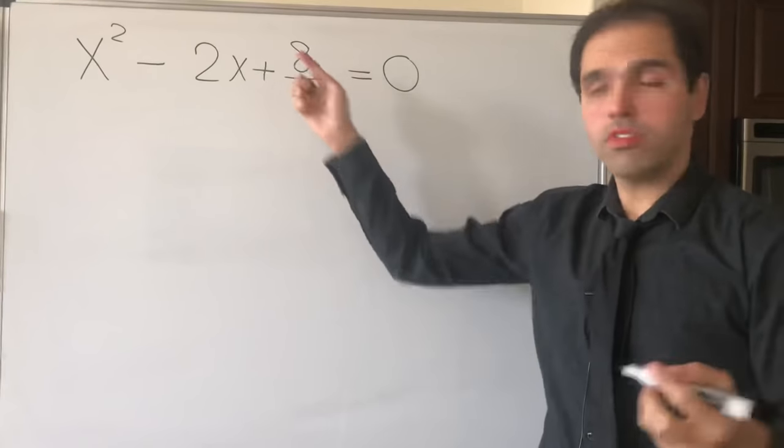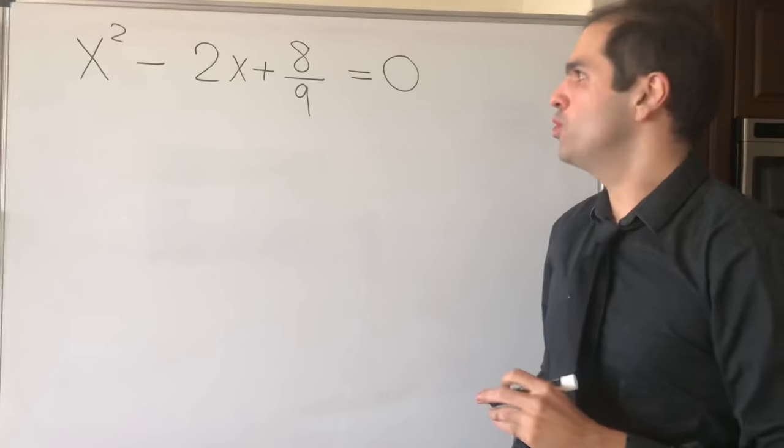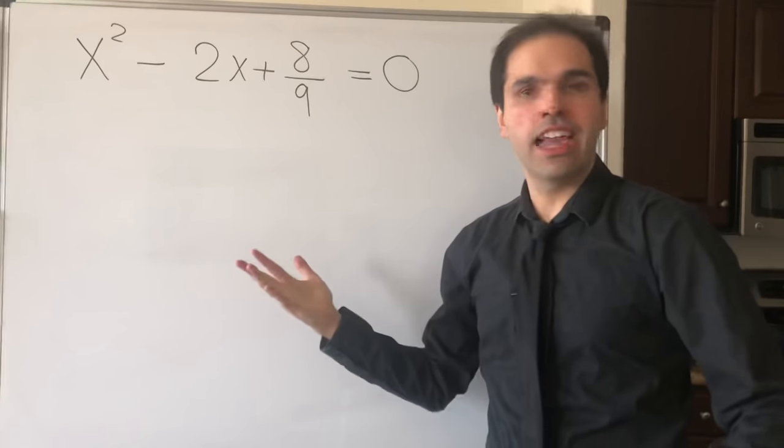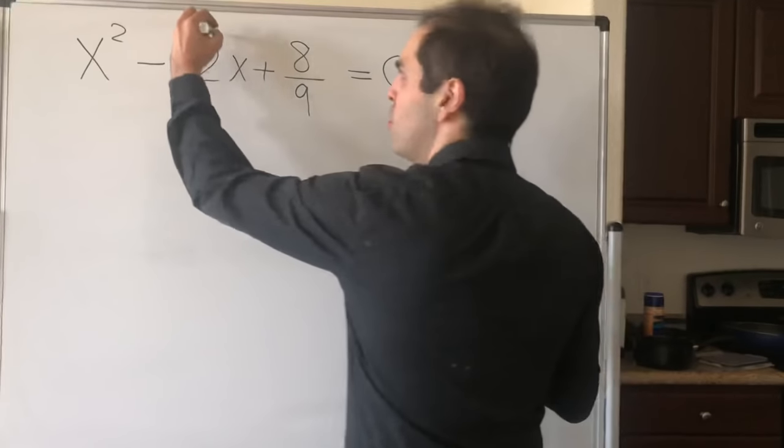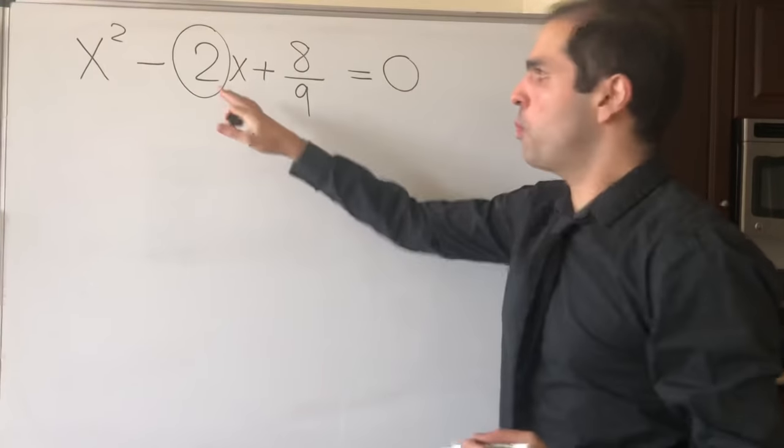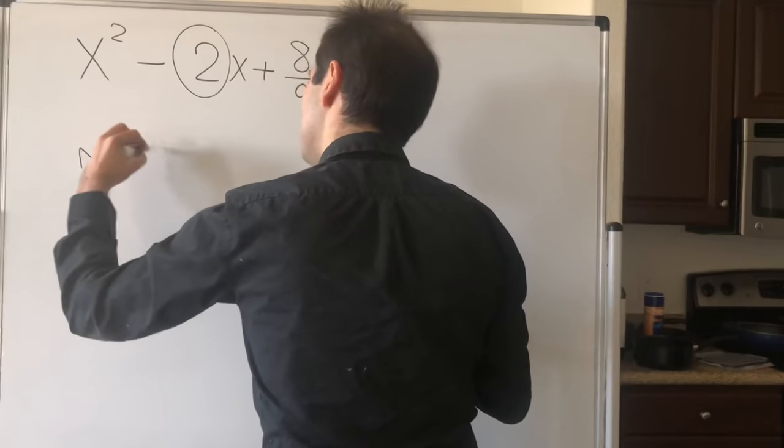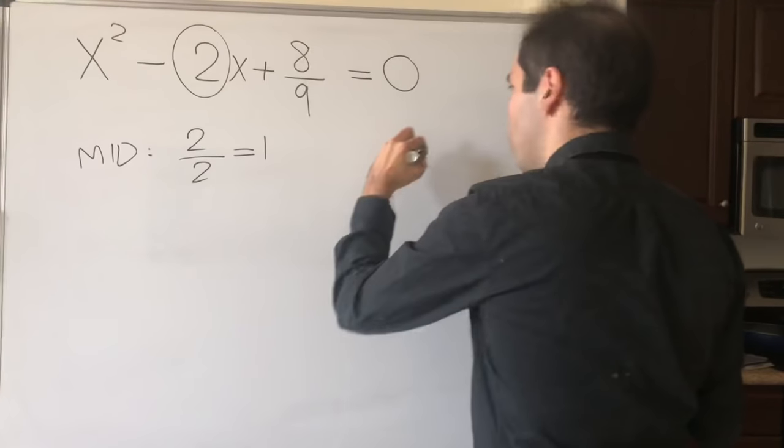Another example. Let's do x² - (2/9)x + 8/9 = 0. If you use the quadratic formula, it's a nightmare, but now you see it's very easy with the Po Shen Lo method. So first of all, what is the midpoint? It's just the sum divided by 2, so the midpoint is 2/2, which is 1.